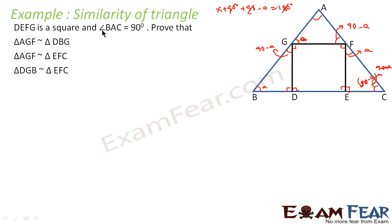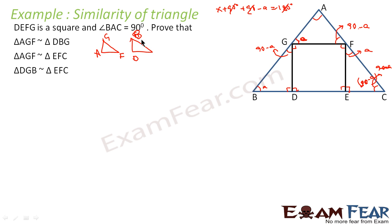Now the first thing we have to prove is that triangle AGF is similar to triangle DGV. Angle A in triangle AGF is 90. We compare triangle AGF with triangle DGV: angle A corresponds to angle D, and angle G in triangle AGF corresponds to angle G in triangle DGV. Angle DGB with this triangle — we are comparing triangle 1 and triangle 2. Angle ADG is A, and angle G here is also A.